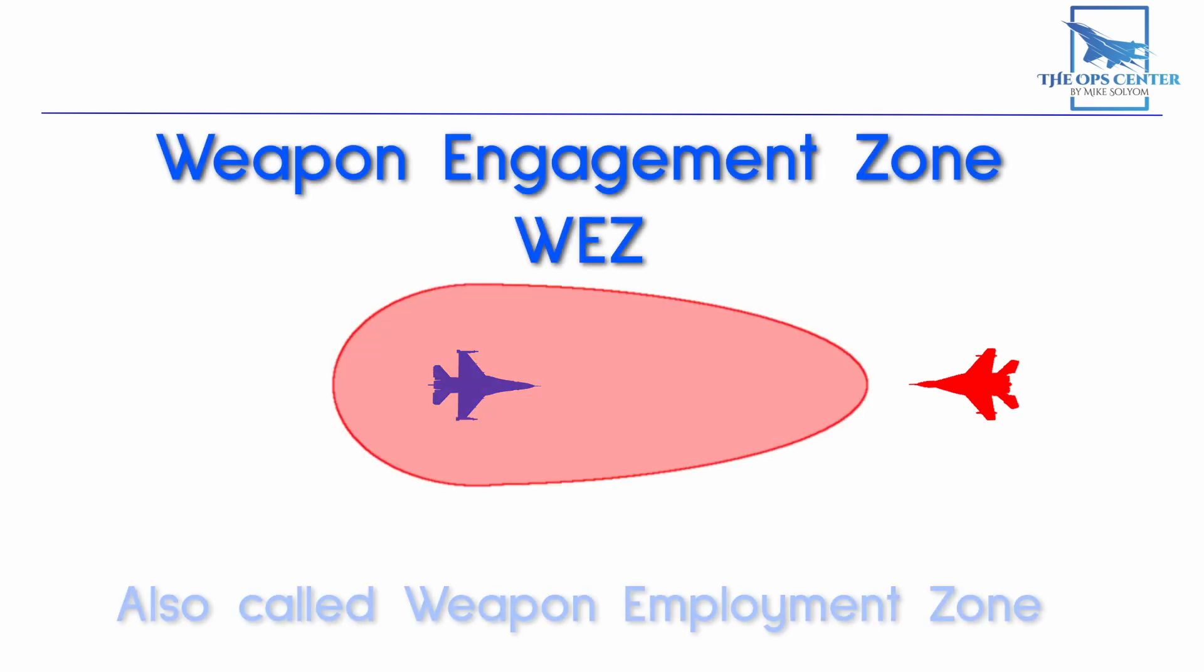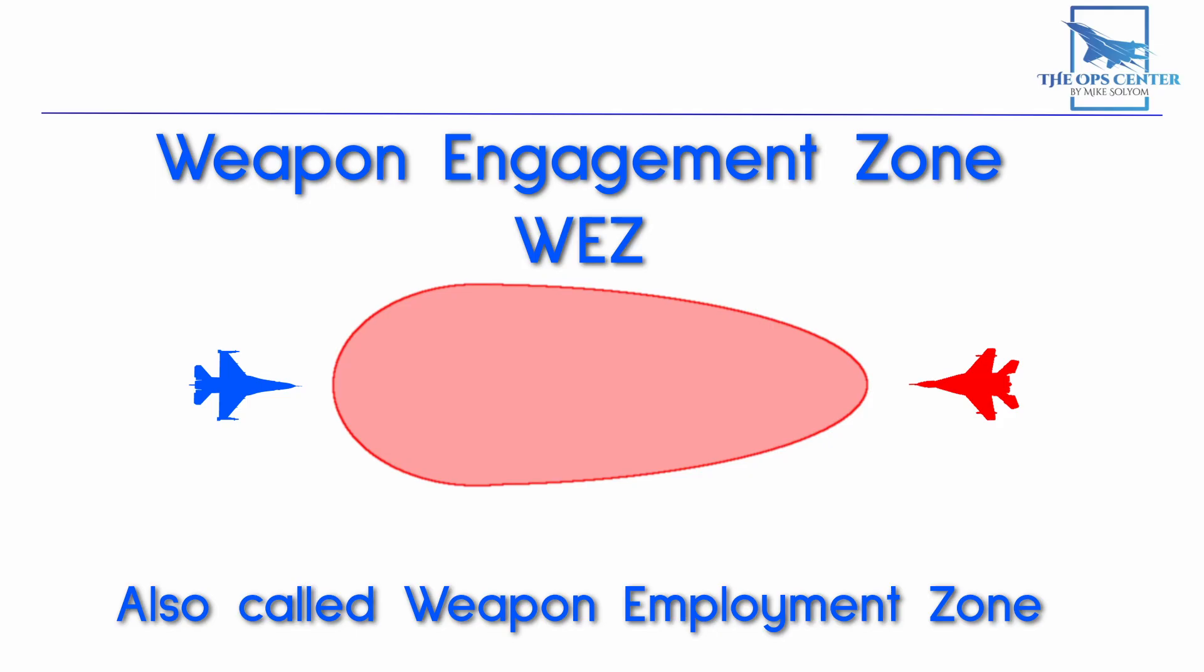But there is one solution that always works. And that's staying outside of the range of the enemy's weapon engagement zone. This is abbreviated as WEZ. And the WEZ would generally be shaped something like this. The exact size and shape will vary based on the weapon, since every weapon has its own limits on range and maneuverability.